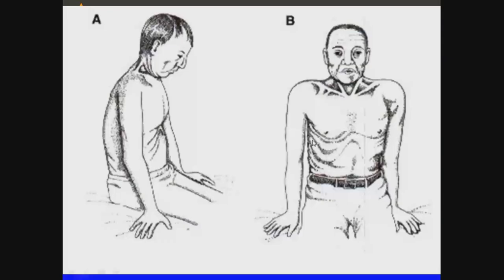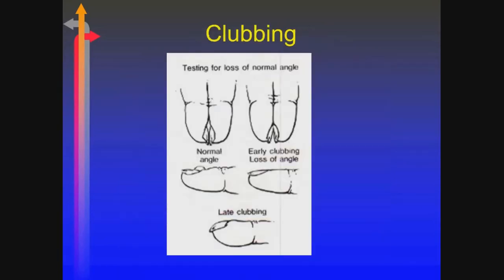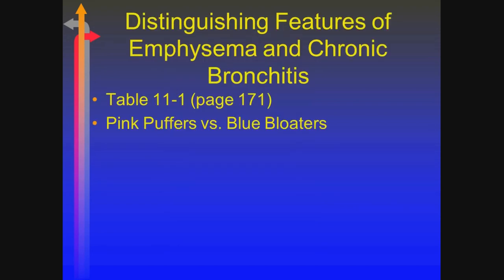As they create negative intrathoracic pressure with their accessory muscles, their diaphragm is actually pulled up and their abdomen is sucked in, so you see a paradoxical movement between their abdomen and chest. There is something called Hoover's sign, which is the inward movement of the lateral wall during inspiration. Here is a picture of the barrel chest that develops because of chronic hyperinflation — there's actual morphological change in their body. And here's clubbing — you can see especially in the late stage the distal phalanges develop this bulbous nature.